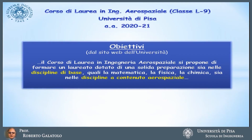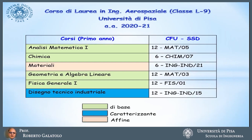The main goal is to form, as written in our course curriculum, a graduate equipped with a solid preparation in the basic disciplines and in the aerospace content. The basic disciplines are fundamental for the continuation of the studies. Looking at the first-year study plan, there are only two semester teachings: chemistry and materials. The other courses — analysis, geometry, physics, and industrial design — are all annual exams, giving students time to digest and assimilate these fundamental contents.